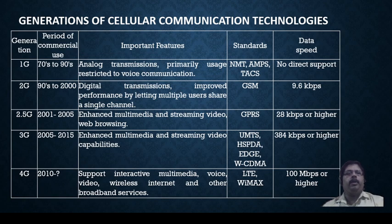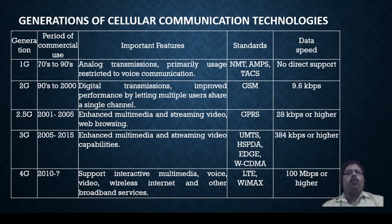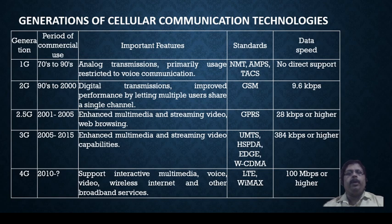GSM was mainly for voice communication, but demand grew for data transfer. Advancements came with concepts like MMS — sending movies — and web browsing. Since GSM couldn't support internet activities on mobile, a technology called GPRS was introduced around 2000 to 2005. GPRS operated at 28 kbps, providing more bandwidth than GSM to handle pictures, videos, and data transfer.